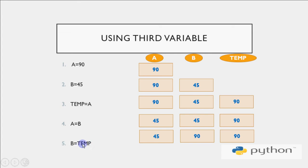Now in the next line, I write B is equal to temp. That means value of temp should be assigned to B. So temp is 90 which goes to B and B becomes 90. And that is what we wanted. We wanted that value of A which was 90 should come to B and value of B which was 45 should come to A. So your values are swapped, that is, interchanged using a third variable.